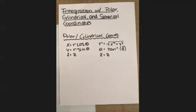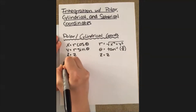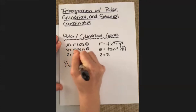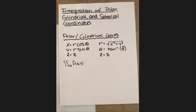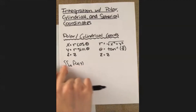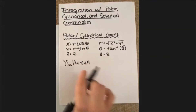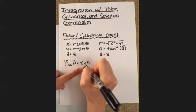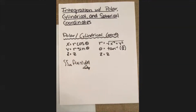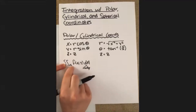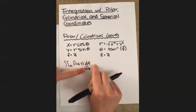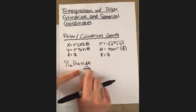When we're integrating in polar and cylindrical coordinates, there are three parts to keep in mind. For a double integral over some region omega of a function f(x, y) with dA — which is just dx dy — we have to think about converting our region, our function, and our differential dA into polar coordinates.